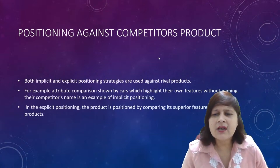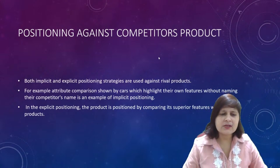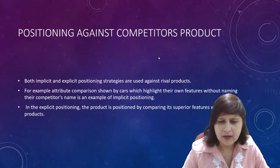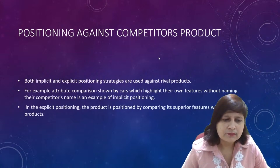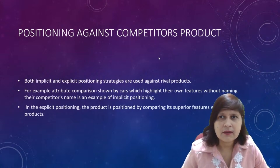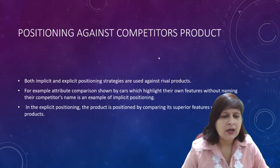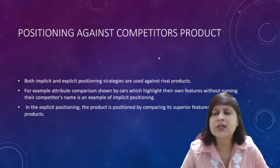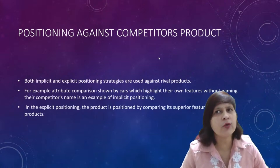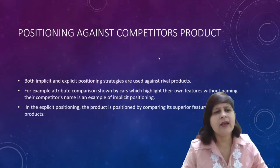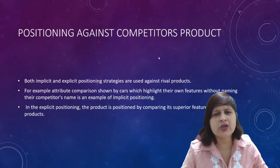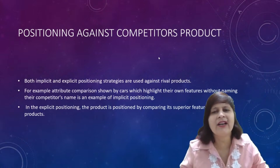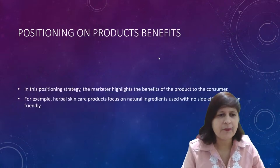Positioning against the competitors can be implicit or explicit. In implicit positioning, the attribute comparison highlights your own features without naming the competitors. In explicit positioning, you name the competitors and directly compare your product with their product.